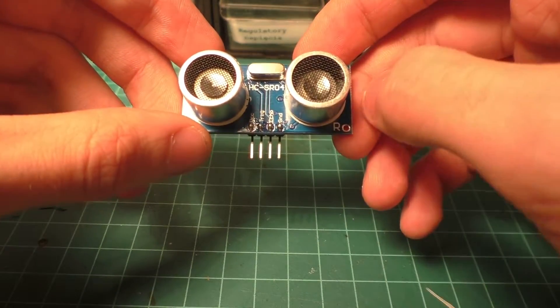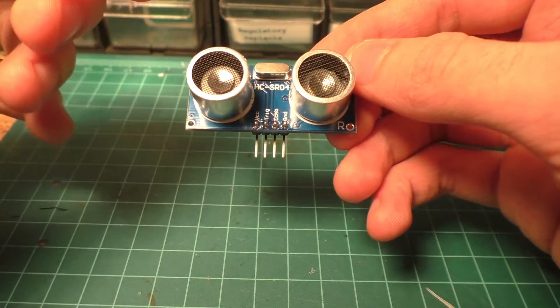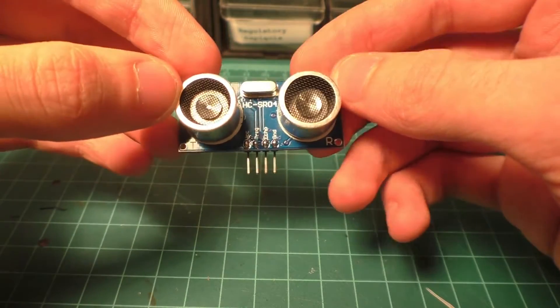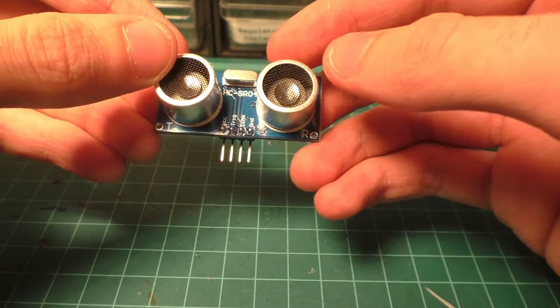Trigger and Echo are two signal pins but we will get to them in a moment. On the front it has two ultrasonic transducers, T and R, so that's I suppose transmit and receive.